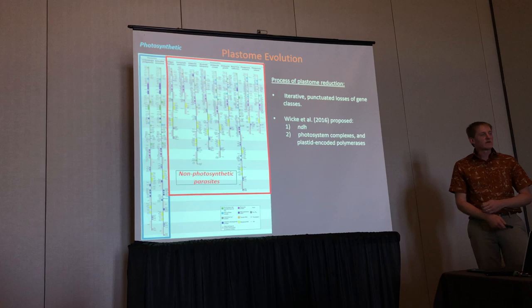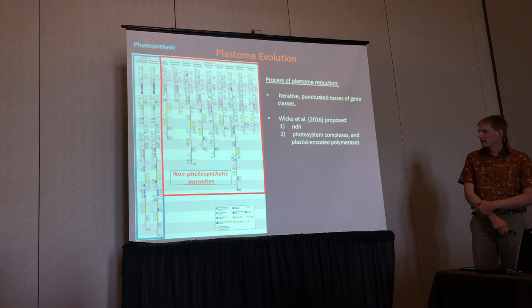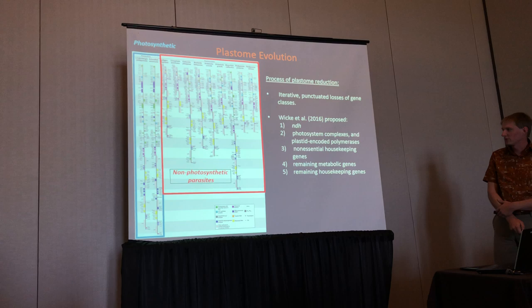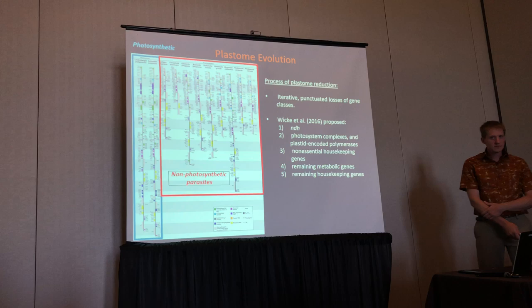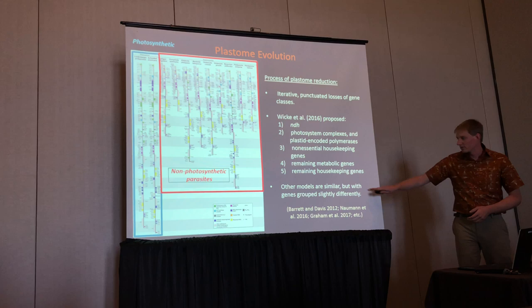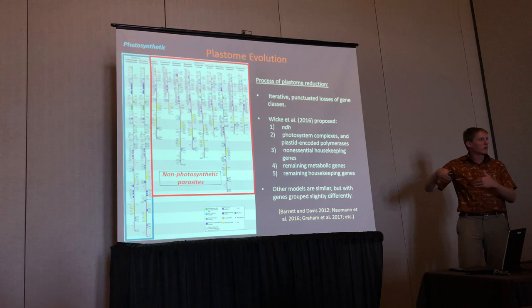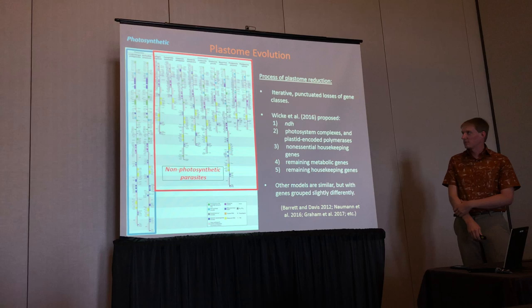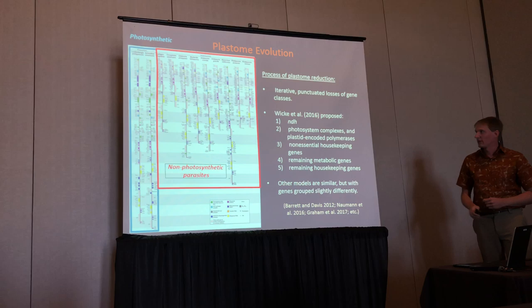A second wave of relaxation of selection and gene loss involves reduction or loss of the photosystem complexes and also plastid-encoded polymerases. And then finally, a number of housekeeping genes — perhaps not as directly involved in the main function of these plastids — are lost. This is one flavor of the model, but others have proposed similar pictures with slight variation as to which genes are in which classes. The main point is that people are starting to really think, from looking at many different species within lineages and also multiple lineages of parasitic plants, that there is this iterative punctuated loss.